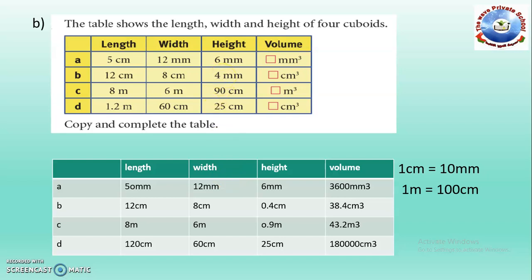Part B: height is 4 millimeters, width is in centimeters and length is in centimeters. The volume is to be found in cubic centimeters. So convert the 4 millimeters into centimeters — it becomes 0.4 centimeters. After multiplication, the answer is 38.4 cubic centimeters.